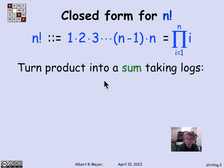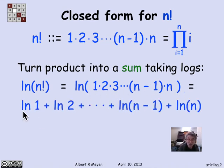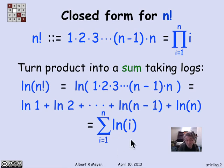As I said, the first trick is to turn the product into a sum by taking logs. So log of n factorial is the product of 1 through n, but a log of a product is the sum of the logs. So it's simply log of 1 plus log of 2 up through log of n. Expressed in sum notation, it's the sum from i equals 1 to n of log of i.